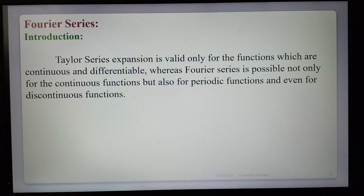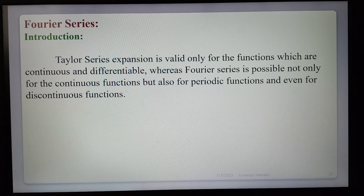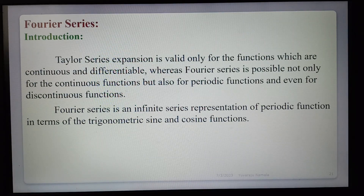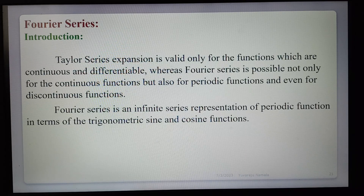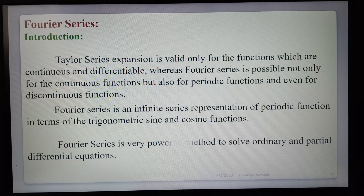Taylor series expansion is defined only at a point, whereas Fourier series expansion is defined over a finite interval. Fourier series is an infinite series representation of a periodic function in terms of trigonometric sine and cosine functions — the series expansion is an infinite series.